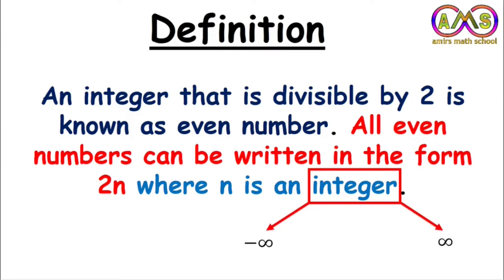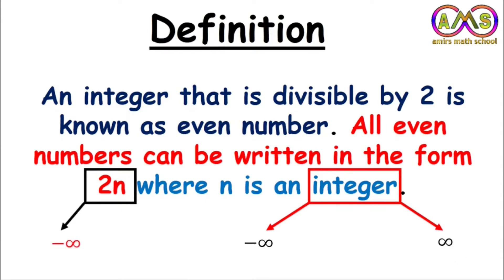So we can easily say this: if n is starting at minus infinity and ending at plus infinity, then 2n must also start at minus infinity and end at plus infinity. So we can say even numbers can be negative.